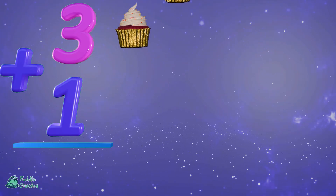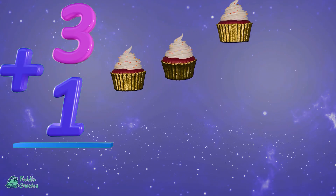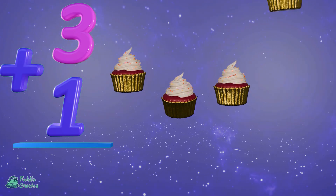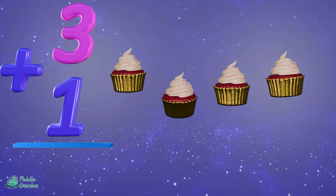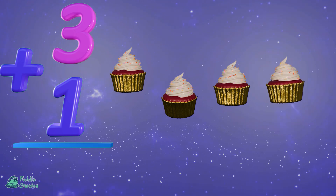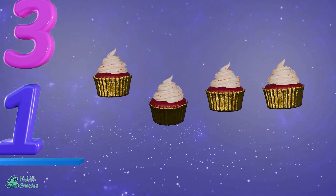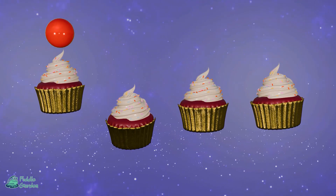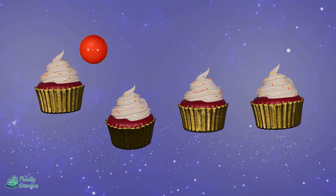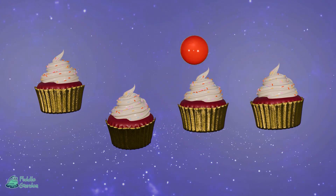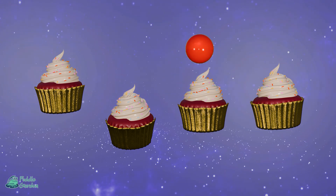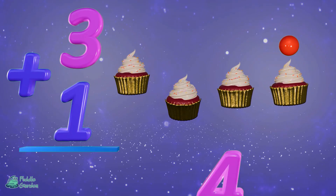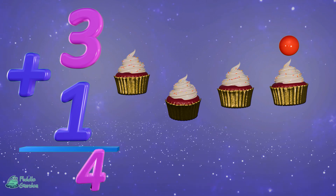Three plus one. So we have three cupcakes, and we're going to add one more. Let's see how many we have all together. One, two, three, and four. Three plus one equals four.